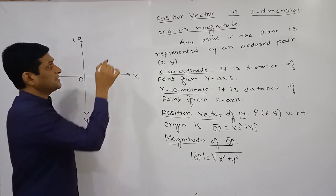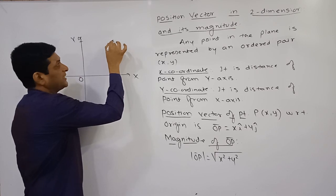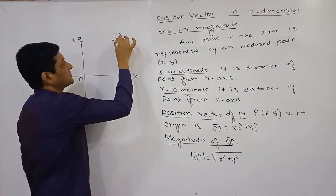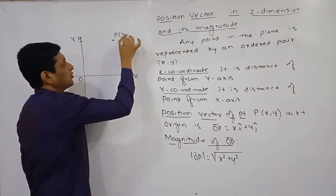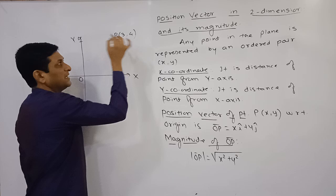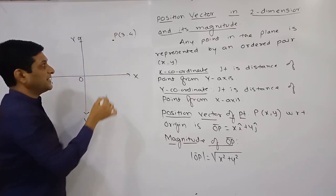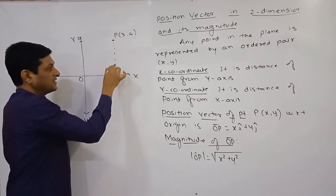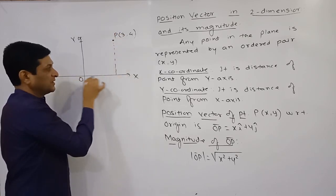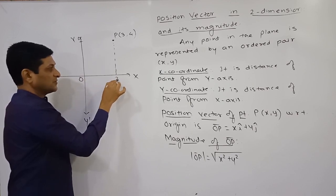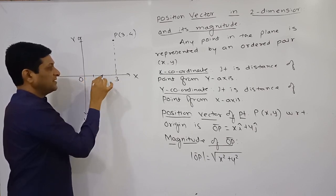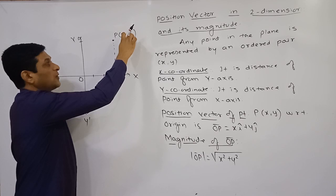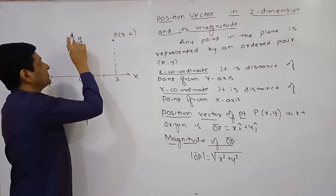Let us consider a point in the plane with coordinates (3, 4). Here the x-coordinate is 3, so this distance along the x-axis is equal to 3. And the y-coordinate is 4.